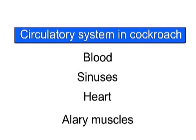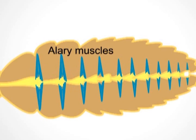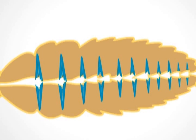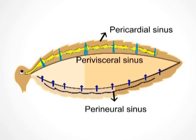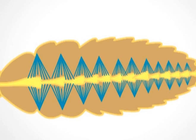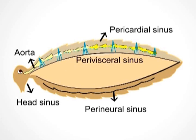Ellery muscles are triangular-shaped muscles whose contraction and relaxation are responsible for forcing blood into the heart. When the Ellery muscles contract, blood flows from the body cavity — that is, the perivisceral and perineural sinuses — into the pericardial sinus. When the Ellery muscles relax, blood flows from the pericardial sinus into the heart through pores called ostia. Peristaltic contractions of the heart then move blood from posterior chambers to the anterior chamber.